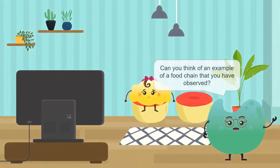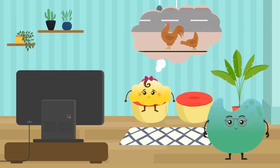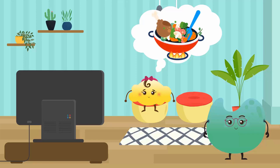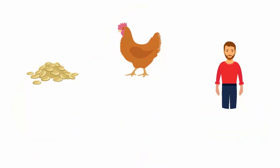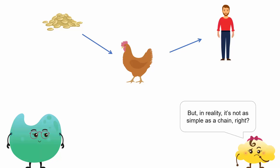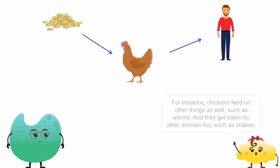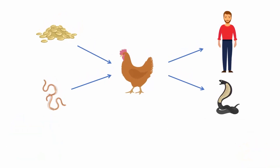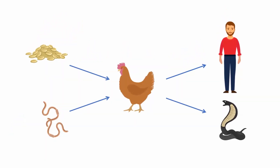Can you think of an example of a food chain that you have observed? I remember seeing a chicken eating grains and then the chicken was cooked for dinner the next day. You're right, we're also part of a food chain. So a food chain represents one possible path, but in reality it's not as simple as a chain, right? For instance, chickens feed on other things as well such as worms, and they get eaten by other animals too such as snakes.